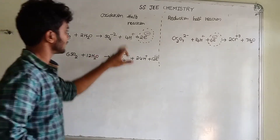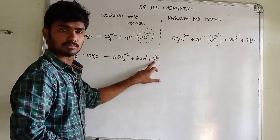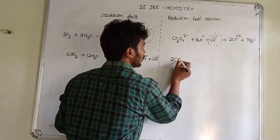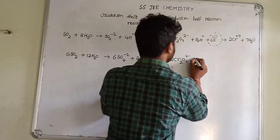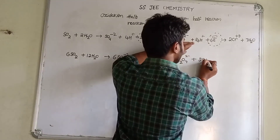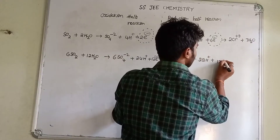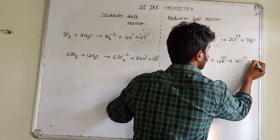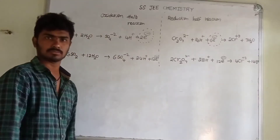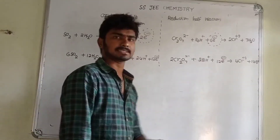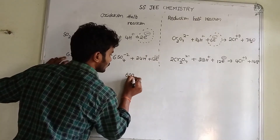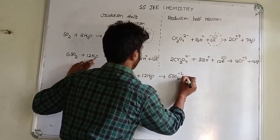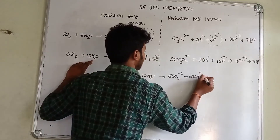Multiplying the oxidation half-reaction by 6: 6SO2 + 6×2H2O gives rise to 6SO4²⁻ + 6×4H⁺ + 12 electrons. That gives 6SO2 + 12H2O → 6SO4²⁻ + 24H⁺ + 12 electrons. Next, multiplying the reduction half-reaction by 2: 2Cr2O7²⁻ + 2×14H⁺ + 12 electrons gives rise to 2×2×Cr³⁺ + 2×7H2O — that is 2Cr2O7²⁻ + 28H⁺ + 12 electrons → 4Cr³⁺ + 14H2O.